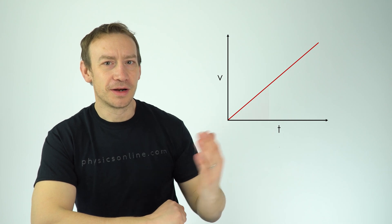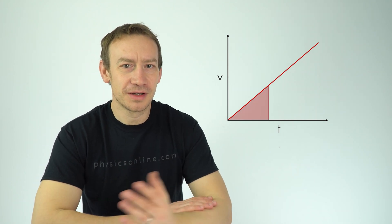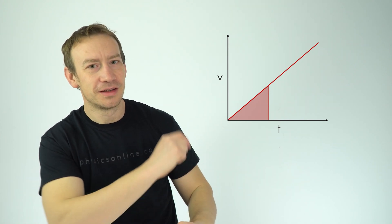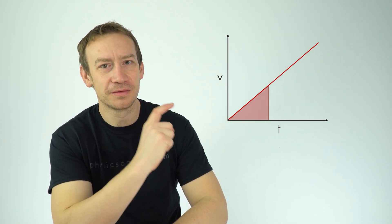Now the area under the graph is equal to the distance travelled, its displacement. And if we think about the shape of this graph here in the first second, this small triangle represents five meters.